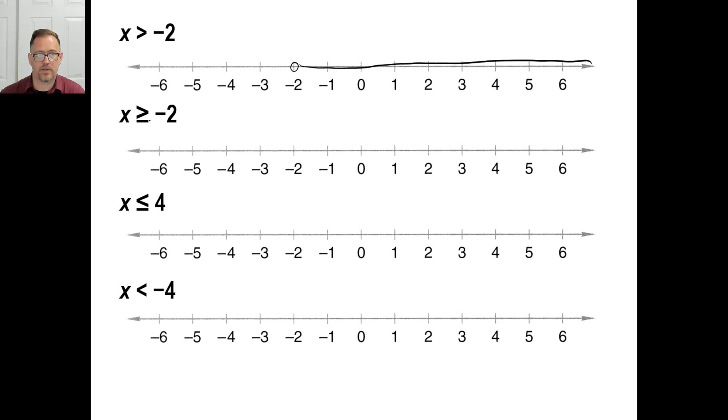Okay. B, x is greater than or equal to negative 2. Means it's the same exact thing, but this time you're going to put a closed in circle and everything to the right because it's greater than that way. Okay.